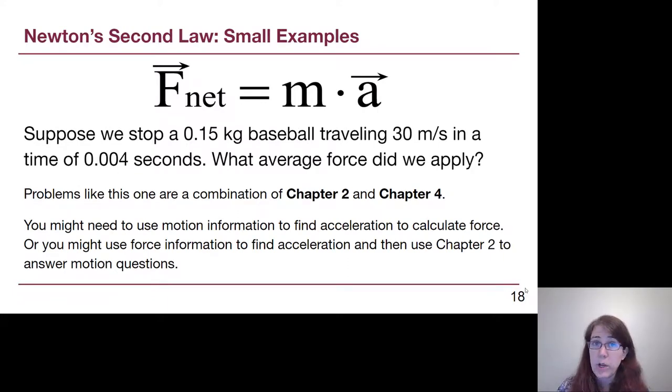All right, a second question for us. This is one that we will see several different times. It's a combination of our chapter 2 understanding and our chapter 4 understanding. Let's say that with a baseball bat or a glove, we stop a 0.15 kilogram baseball that was traveling 30 meters per second at us, and we stop it in a time of 4 milliseconds, 0.004 seconds. What's the average force that we applied during that short time period? So, pause the video and think through it if you have the ability to.